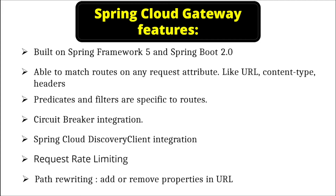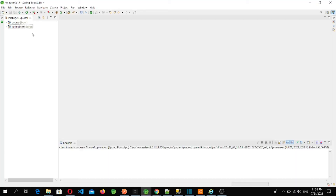We can easily add a circuit breaker in Spring Cloud Gateway, which we will do in coming videos. We can easily integrate a discovery client — we will use Eureka as the discovery client, which we will add in upcoming videos. We can easily limit requests coming to the gateway and define in configuration how many requests we want from each route. Path rewriting allows us to easily remove and add any properties in the URL such as headers or content type.